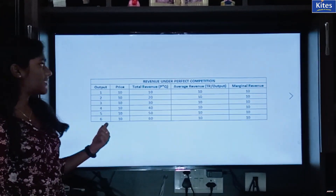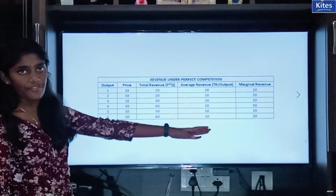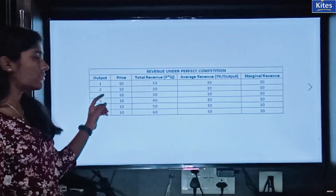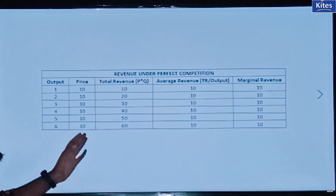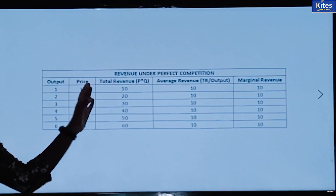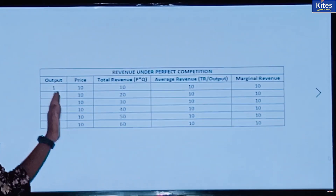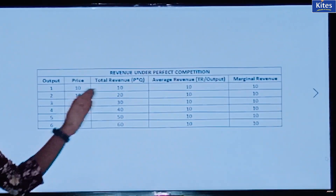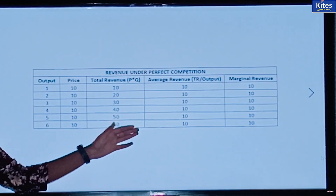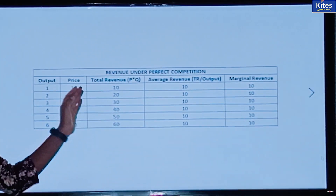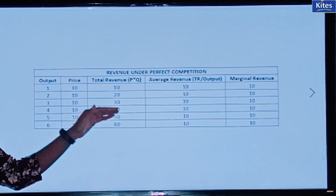This is your output, price, total revenue, average revenue, and marginal revenue. The output is increasing from 1 to 6 and your price would be the same in perfect competition — there will be no change in price. Total revenue is calculated by multiplying your price and output: 1 into 10 is 10, 2 into 10 is 20, and so on till 60. Average revenue is the total revenue per unit output, that is total revenue divided by output: 10 by 1 is 10, 20 by 2 is 10, so average revenue will be 10 throughout.